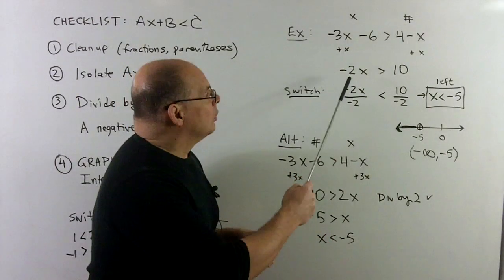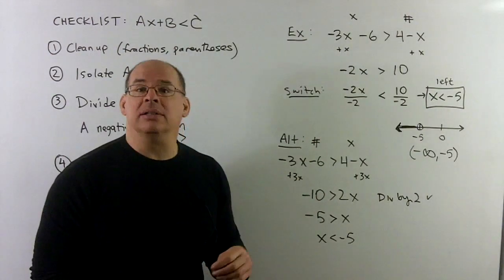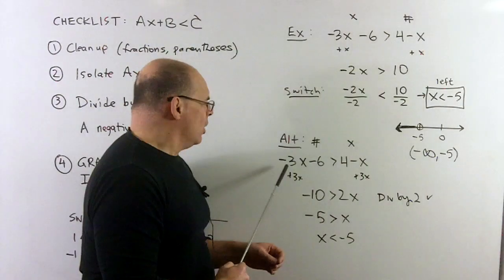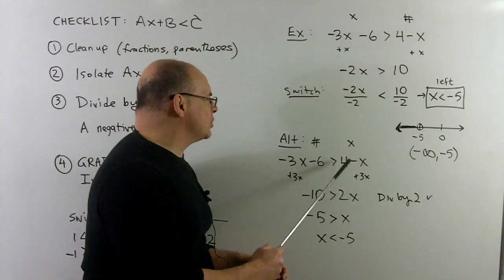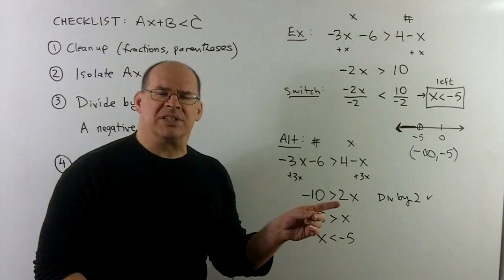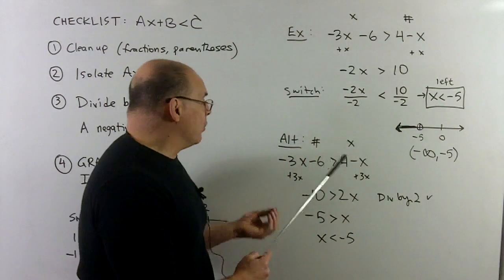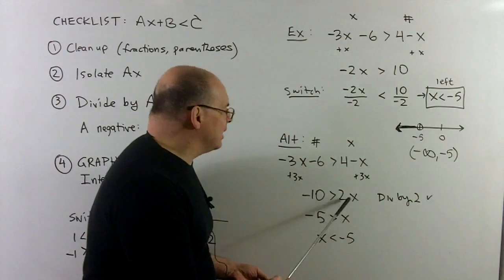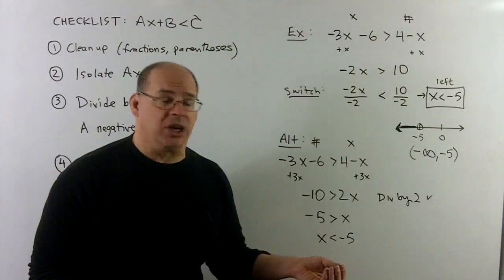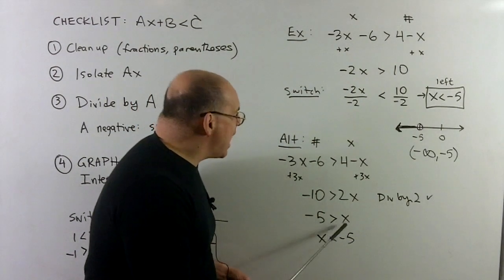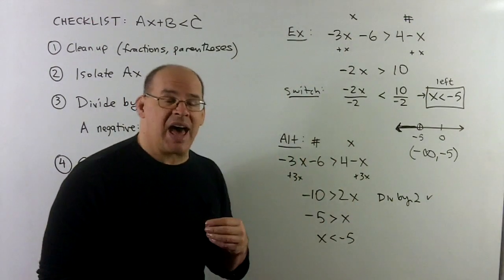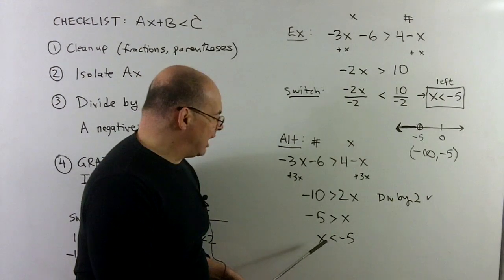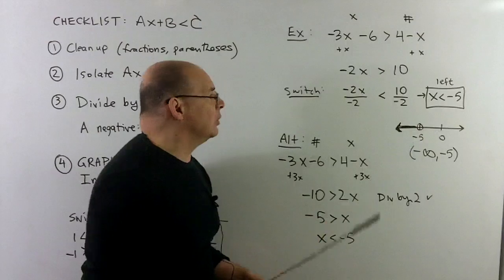Suppose we want to avoid dividing by a negative. Instead of putting x on the left, put all x terms on the right. To get rid of the minus 3x, add 3x to both sides — this gives a positive coefficient on x on the right. Proceeding: adding 3x to both sides gives minus 10 greater than 2x. Dividing by 2 — which is positive, so no direction change — gives minus 5 greater than x. To get x on the left side, we use our reversal: x less than minus 5, which brings us back to the same answer.